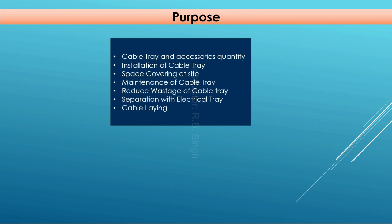Separation with the electrical tray is very important. The separation between electrical cable tray and instrument cable tray must be maintained: for voltage up to 120V, 300 mm separation is required; up to 400 or 440 volts, 600 mm spacing is required; and for HT cables, at least one meter gap between the two trays is important. These separations can be shown on the cable tray layout so that they are maintained at site. Also, if you have the cable tray layout, cable laying will be much easier.